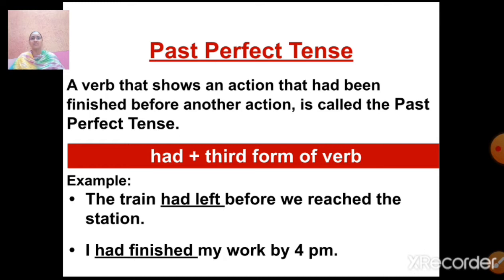Let us understand past perfect tense with examples. 'The train had left before we reached the station.' Here two actions are being performed in the past — the train had left and we reached the station. This tells us what happened first and what happened next. 'I had finished my work by 4 PM.' Irrespective of whether the subject is singular or plural, you need to add 'had' plus third form of verb. In this case, the third form of verb is 'finished'.